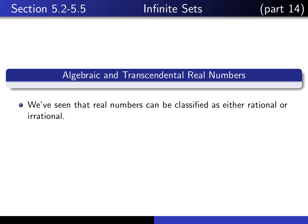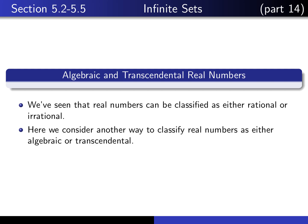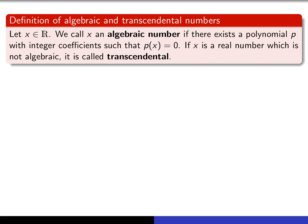As we know, every real number is classified as either being rational or irrational. But there's another way of classifying the set of real numbers into so-called algebraic numbers or transcendental numbers. If we give ourselves a real number x, then we say that x is algebraic provided there exists a polynomial p having only integer coefficients such that x is a root of p. If x is a real number which is not algebraic, then we refer to it as a transcendental real number.